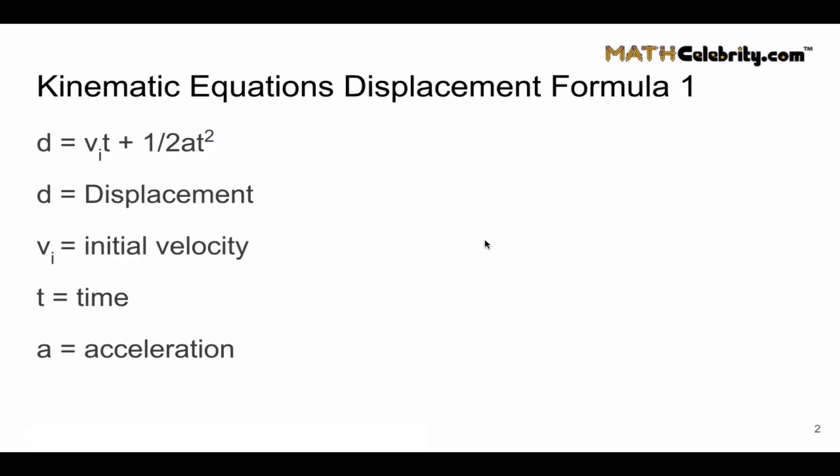So let's walk through kinematic equations displacement formula one and it's d equals v sub i times t plus one-half at squared. The four variables in this equation you need to know are d displacement, v sub i initial velocity, t time, and a acceleration.